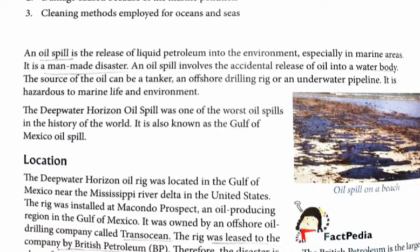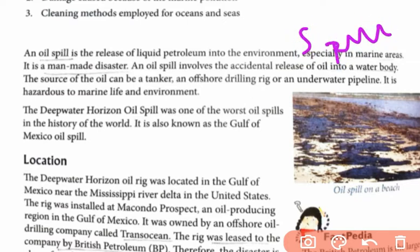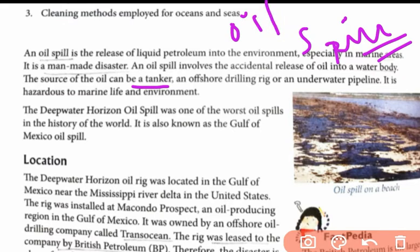Oil rig is a new term. What is an oil rig? It is a structure with various equipment and machines, and what it does is drill oil wells. That is called an oil rig. The source of the oil spill — the accidental release — can be from a tanker, an offshore drilling rig, or an underwater pipeline. You can say it is a floating platform from where petroleum is mainly extracted, and that's where there is a chance of oil spill.